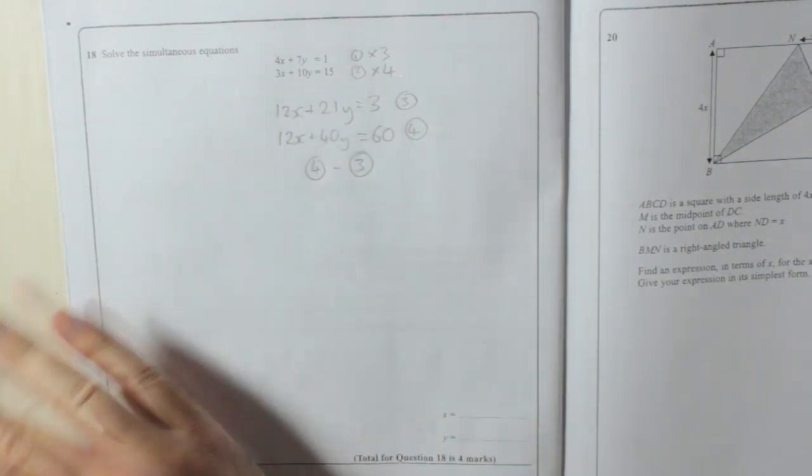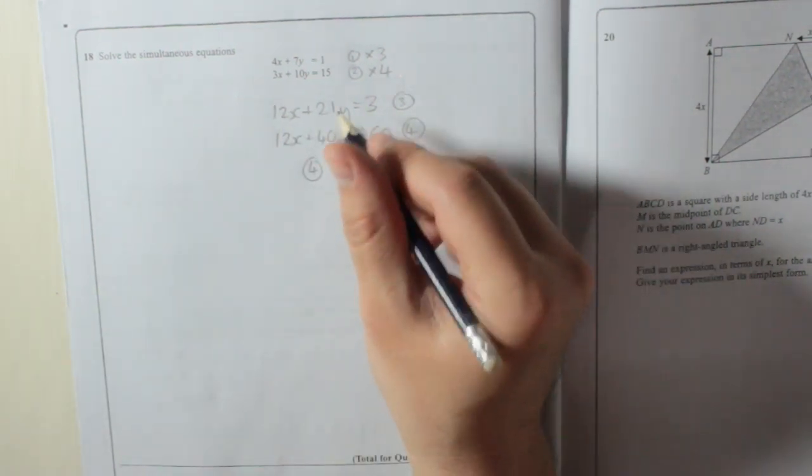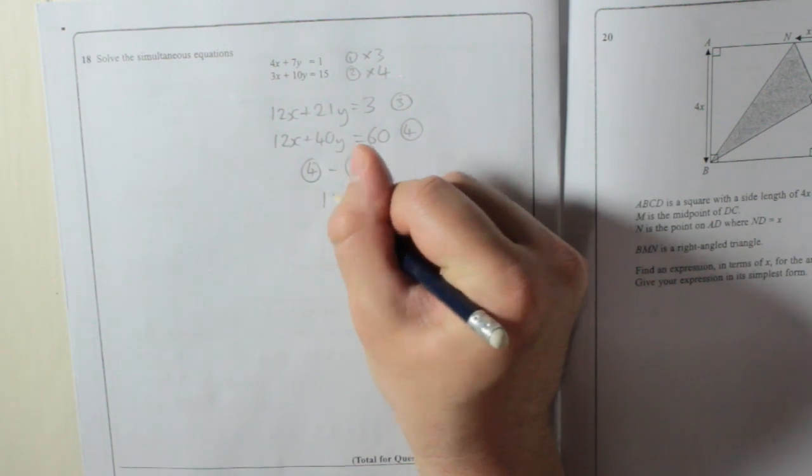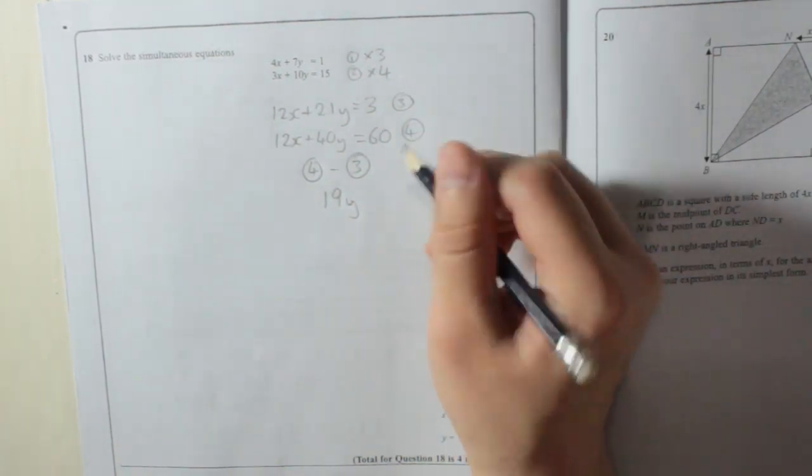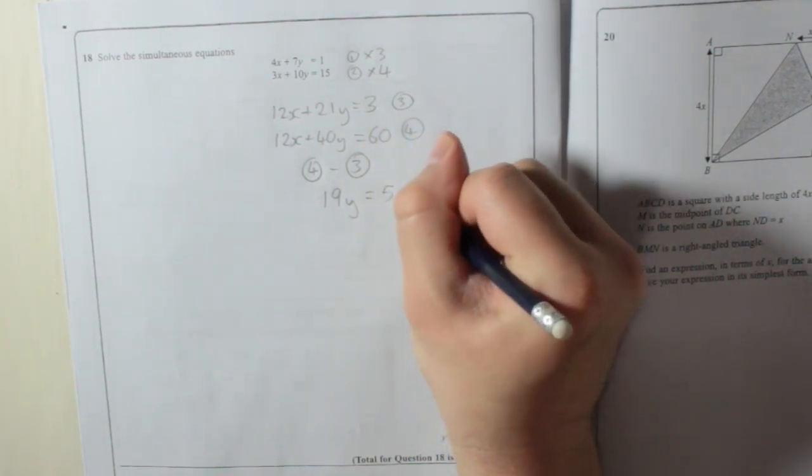So 12x take away 12x is nothing. That's gone. 40y take away 21y is 19y. And 60 take away 3 is 57.